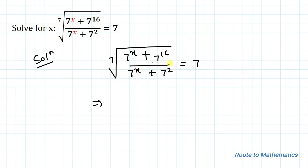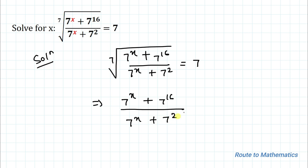To remove the 7th root, I will raise both sides to the power of 7. By taking 7 as the power on both sides, we have: 7 to the power x plus 7 to the power 16, divided by 7 to the power x plus 7 squared, equals 7 to the power 7.